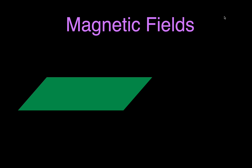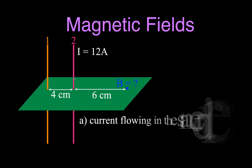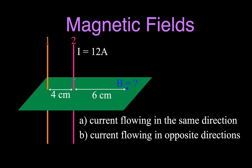In this video, we have a right-hand corner right here, and we're going to have two current-carrying wires — wire number one and wire number two. There's a surface perpendicular to these two wires; it's a horizontal surface, and these two wires are flowing up perpendicular to that surface. They are four centimeters apart from each other, each carrying a current of 12 amperes. We want to know what the magnetic field is at a point six centimeters away from wire number two. We're going to do this problem two ways: once when the current flows in the same direction through both wires, and once when the current flows in opposite directions.